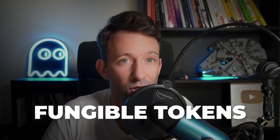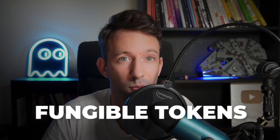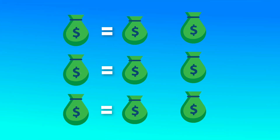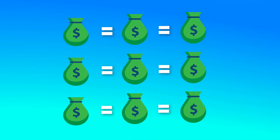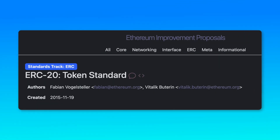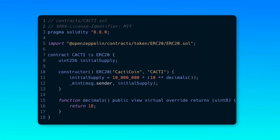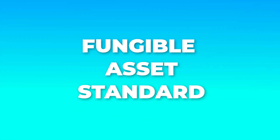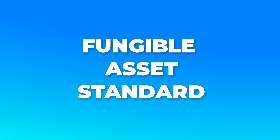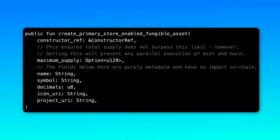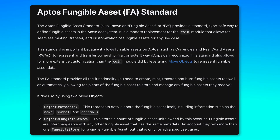Next, let's talk about fungible tokens. Tokens are said to be fungible when any unit of a token can be exchanged for any other unit of the same token. On the Ethereum ecosystem, fungible assets are represented with ERC20 tokens, implemented as smart contracts non-natively. On Aptos, the equivalent of ERC20 is the fungible asset standard. With this standard, you can easily create fungible tokens on Aptos, implemented as Aptos smart contracts, also called modules.